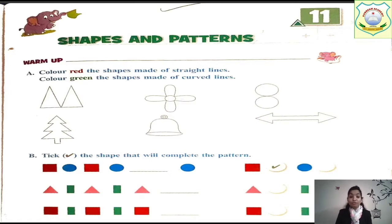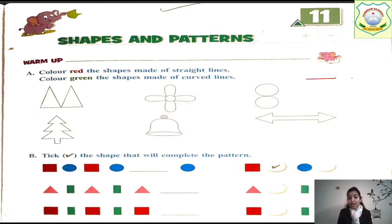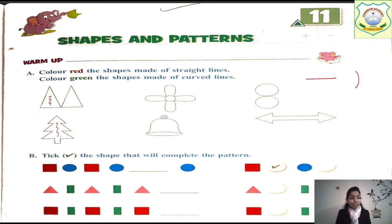First of all we need to do the warm-up exercise. The question is: color red the shapes made of straight lines, and color green the shapes made of curved lines. So you have to color here red and green. Straight line means like this, and curved means like this. We need to color it with red, so take your pencil colors and color it like this.